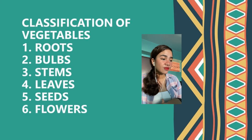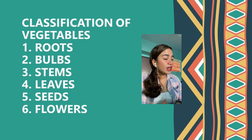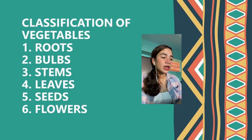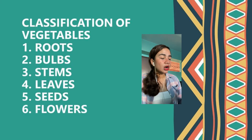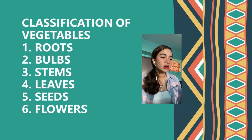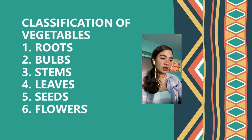We also have flowers. Examples of flowers are broccoli and cauliflower. There are also some fruits that are routinely called vegetables and are routinely used as vegetables.